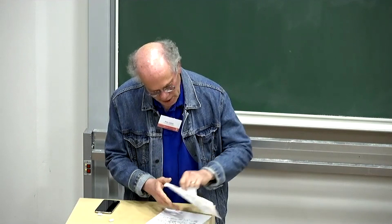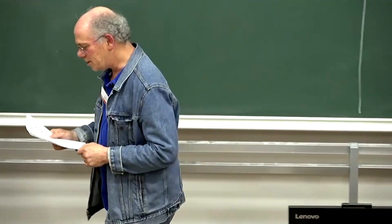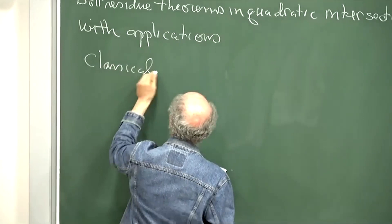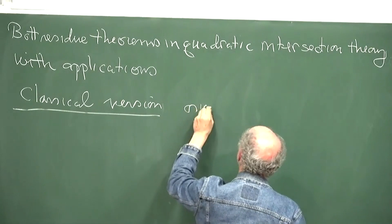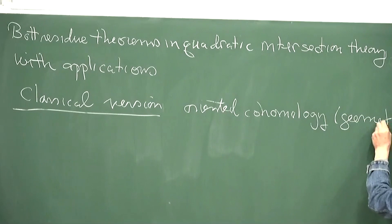Bott Residue Theorem with Applications. A lot of what I'll be talking about was covered in the previous lectures, but since a bunch of you weren't here then, let me say a little bit about the background first. Classical intersection theory — and I'll make it a little fancier in that what I mean by this is oriented cohomology, but just the geometric part.